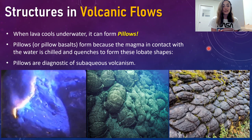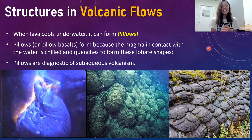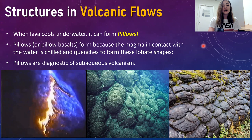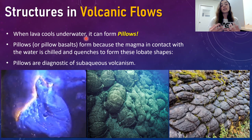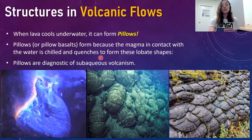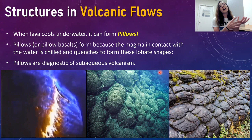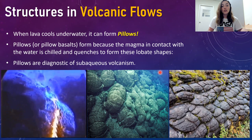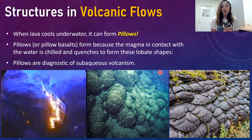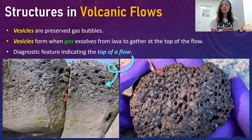Another really cool volcanic structure is pillows — not soft squishy pillows, but pillow basalts. These form when lava cools underwater. The magma in contact with water is chilled and quenches to form these lobate shapes. Pillow basalts are diagnostic of subaqueous volcanism, or at least volcanism where a flow entered water. At mid-ocean ridges, for example, magmatism flows directly into the ocean, forming these pillows — that's where we get the most regionally extensive deposits of pillow basalts.